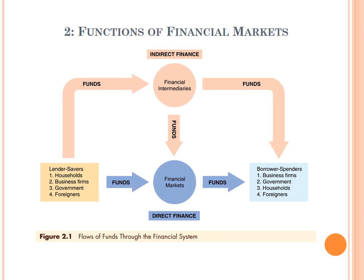In the functions of financial markets, we have two parties: the lenders or savers, and the borrowers or spenders. The lenders could be households, business firms, governments, or foreigners. The borrowers could be business firms, governments, households, or foreigners.